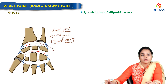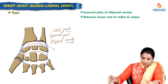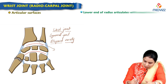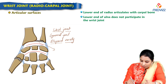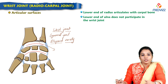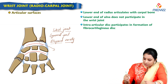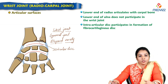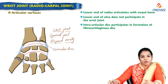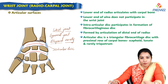This joint is the synovial joint of ellipsoid variety, which is between the lower end of the radius and the carpus. The lower end of the radius articulates with the carpal bones. The lower end of the ulna does not participate in the wrist joint. There is an intraarticular disc — a triangular fibrocartilaginous disc — which participates in the formation and articulates with the proximal row of carpal bones.